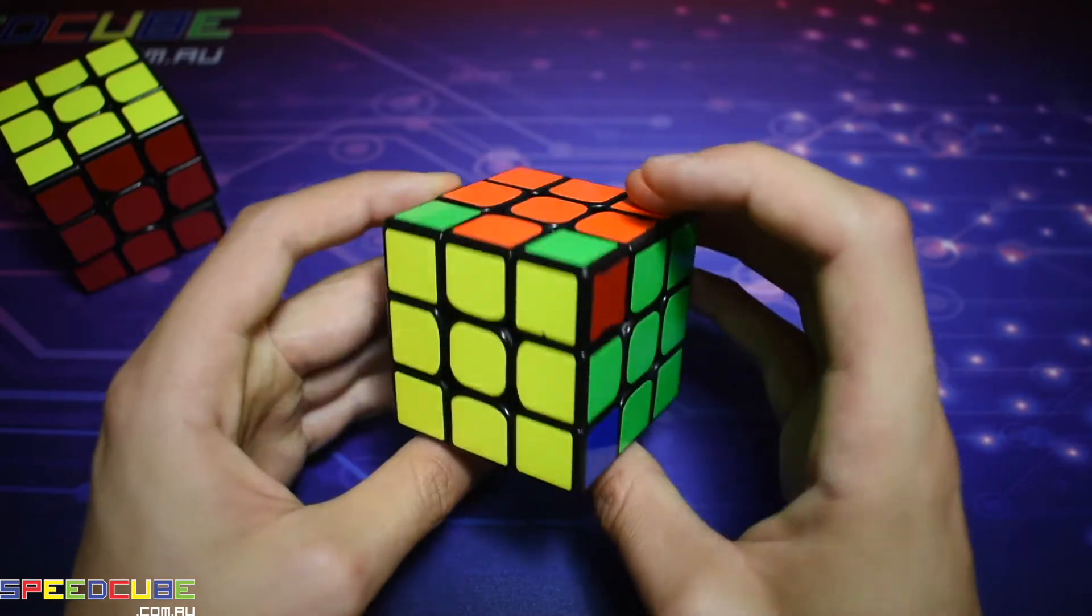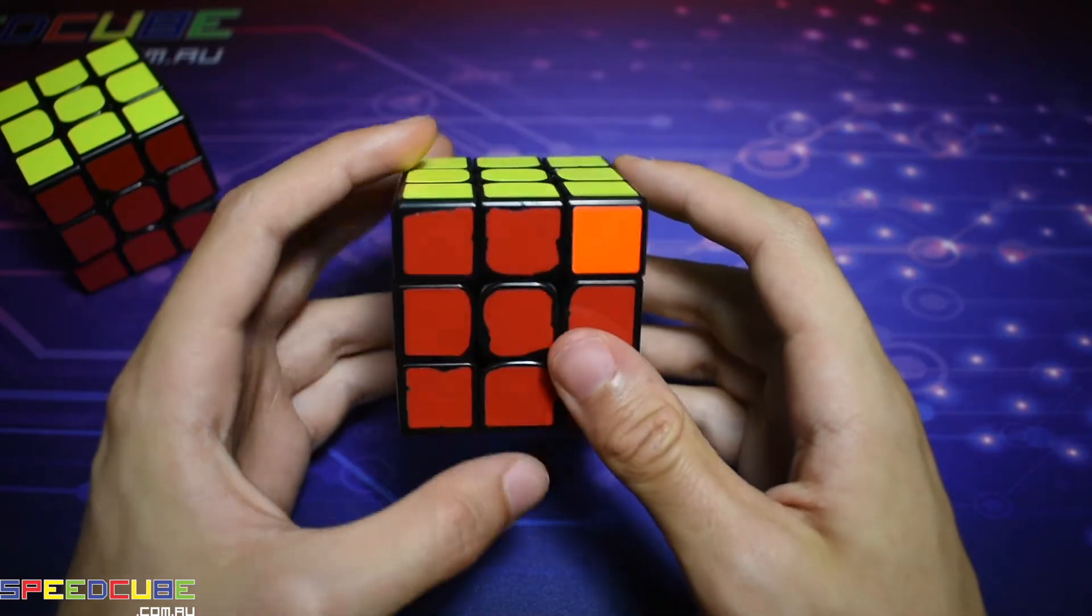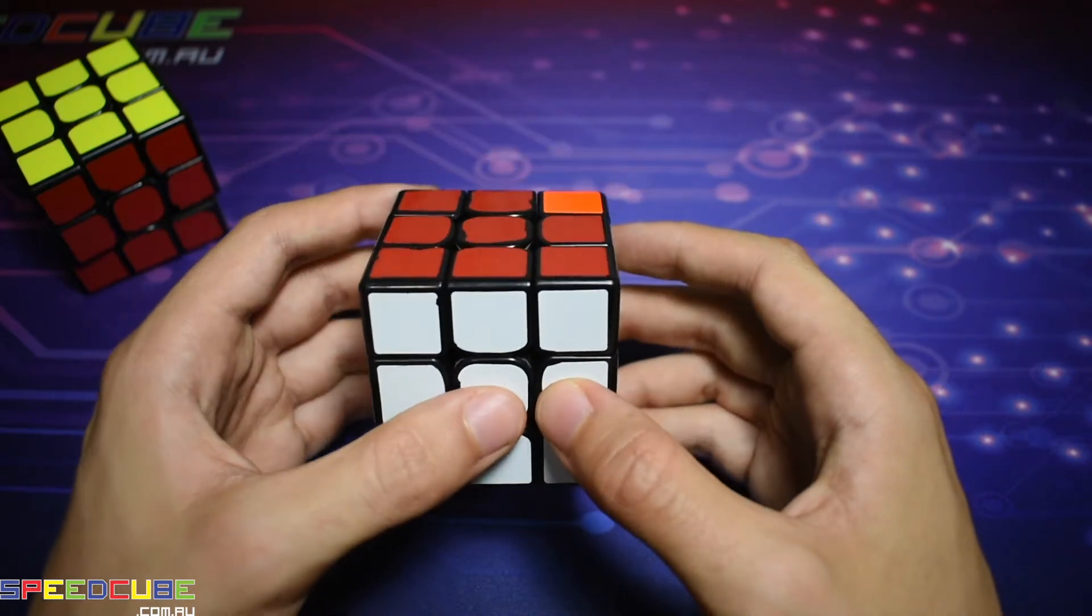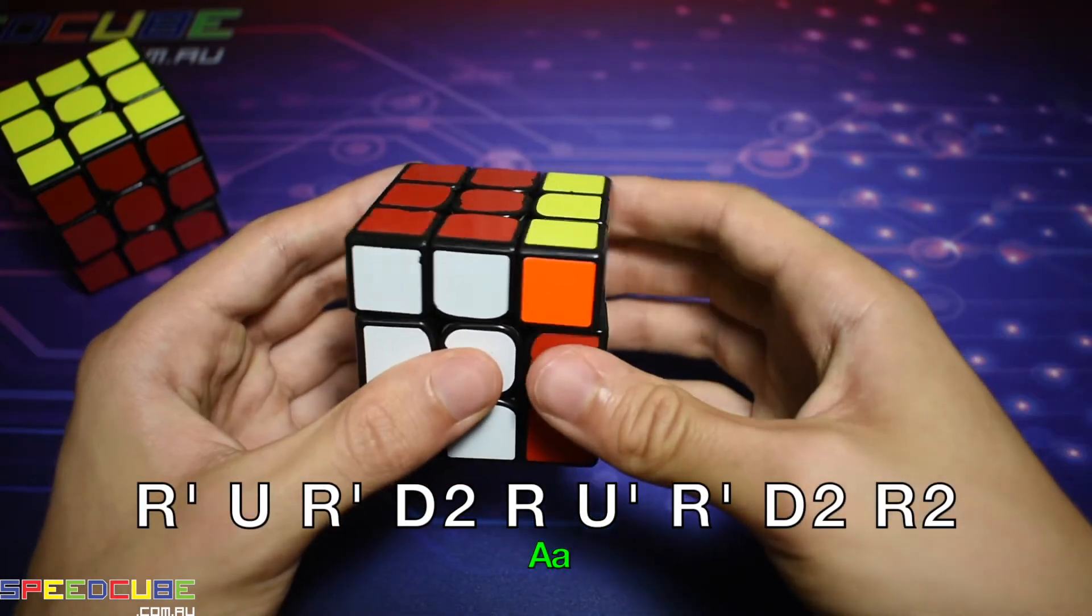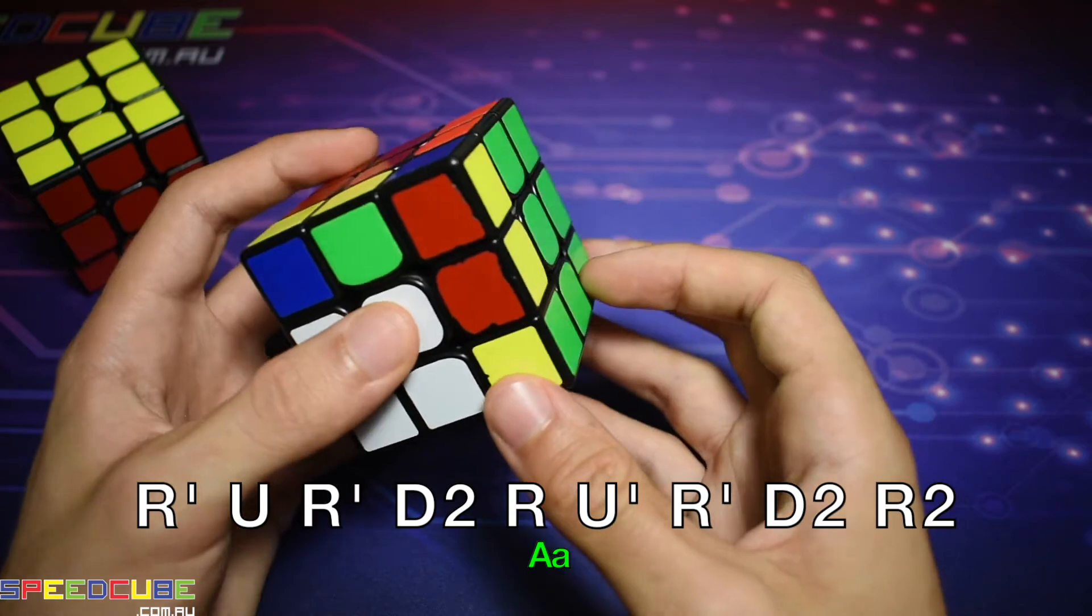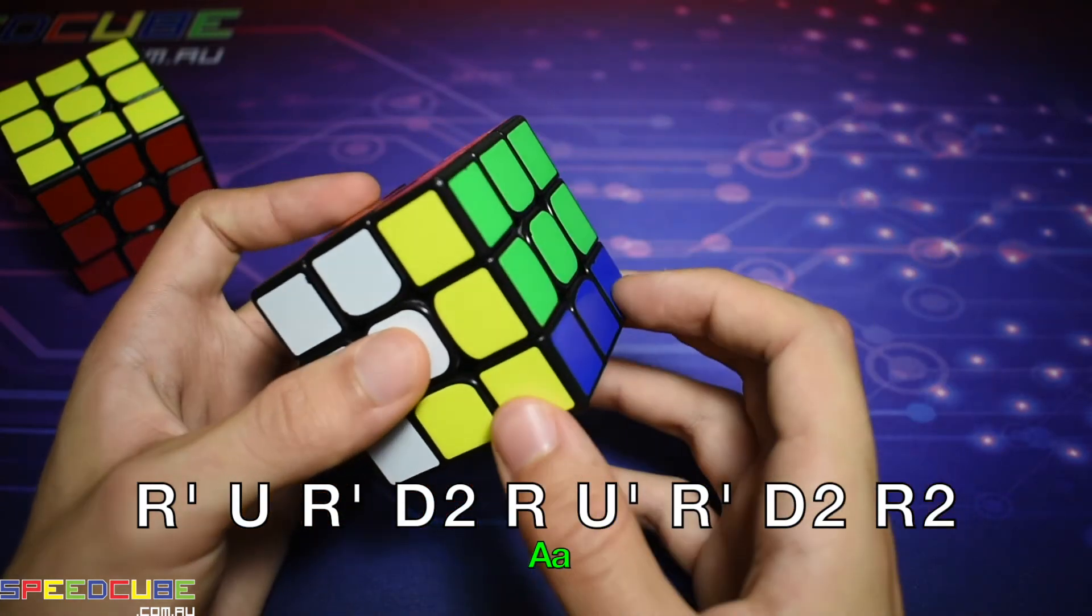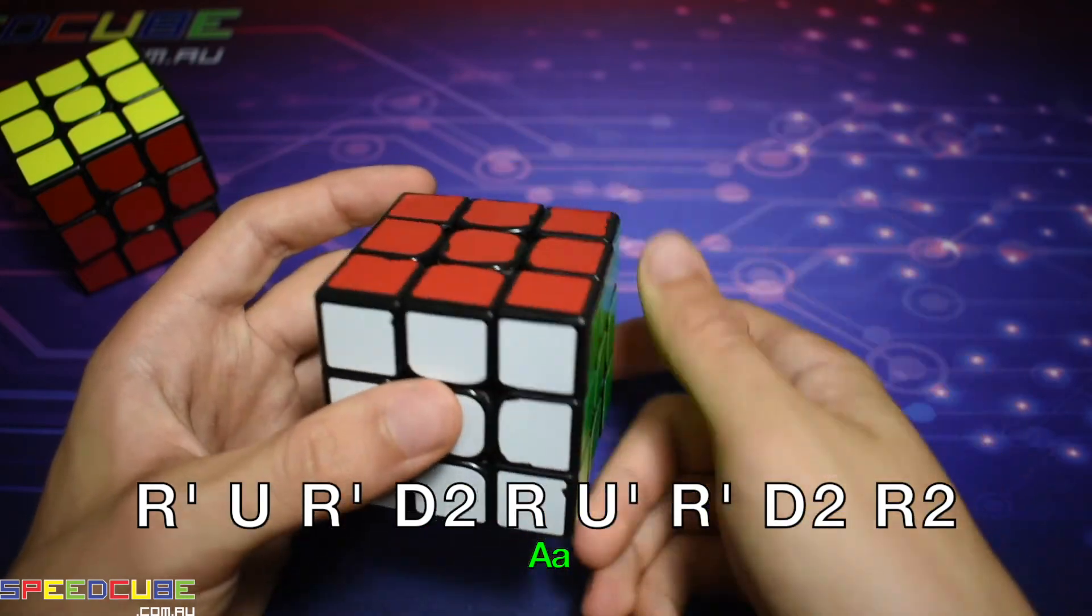And for the other A perm where the bar is at the back, same again you want to come down to the white side at the bottom and do this. Right inverted, up, right inverted, down to, right, up inverted, right inverted, down to, right to.